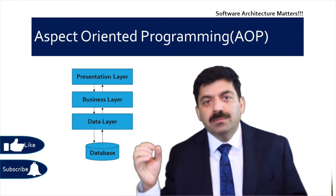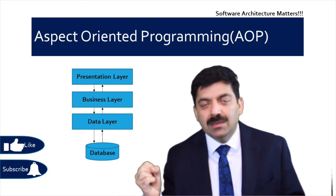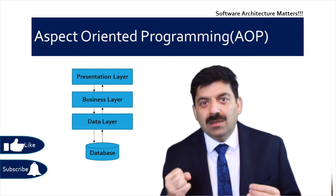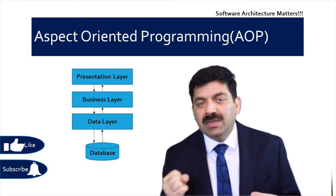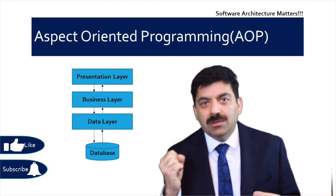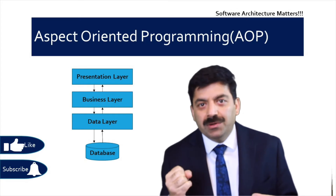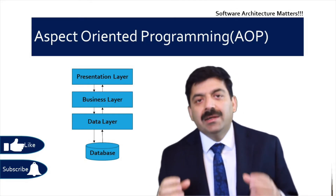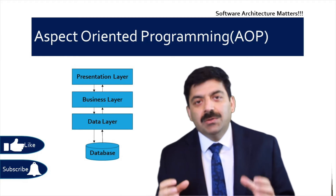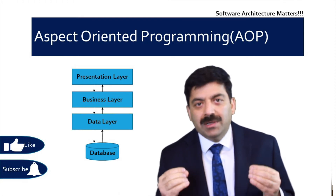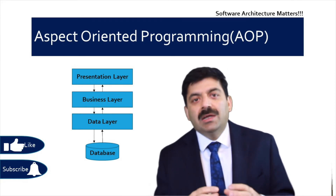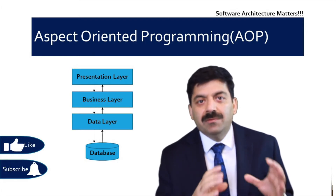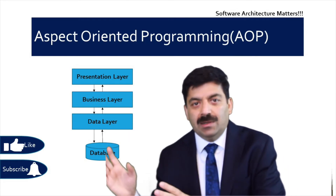Then you have a business layer. In the business layer, you have all logic about business — how your amount is being calculated in your balance, how it's being retrieved. Then you have a data access layer. In the data access layer, you have all the code related to data access technology so that you can change the data access library from one library to another library.